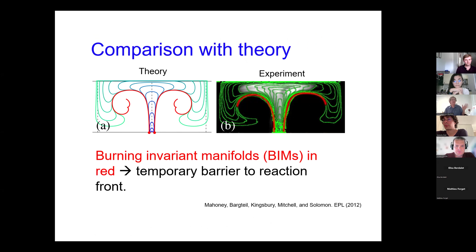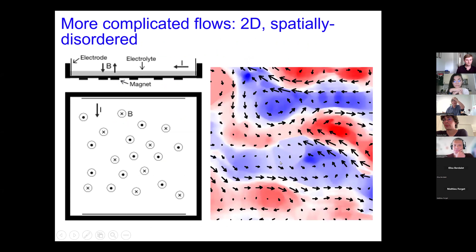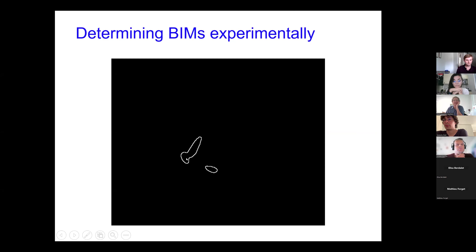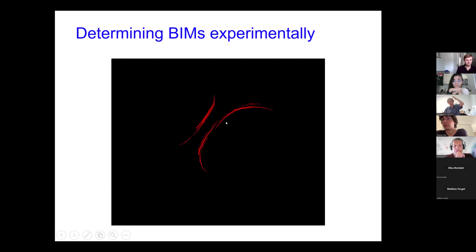We haven't confined our experiments to just this one flow — we've also looked at a spatially disordered fluid flow, which we create by putting the magnets randomly in the box. We can trigger a reaction and track the outline over time. What you should notice is that the reaction is getting funneled through certain regions but not penetrating through others. So we can actually identify those as barriers keeping the reaction from moving outward.